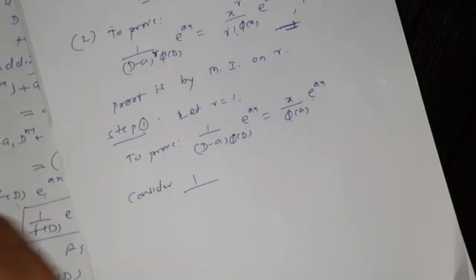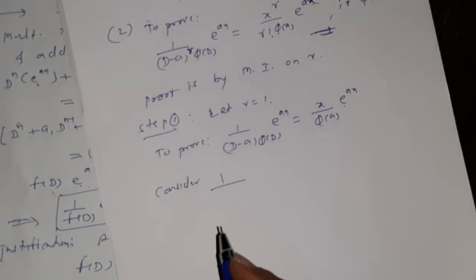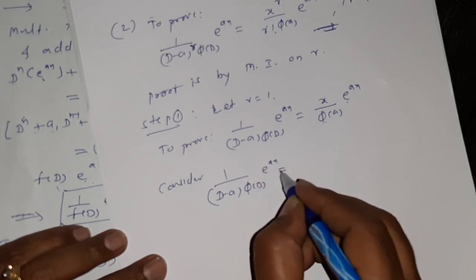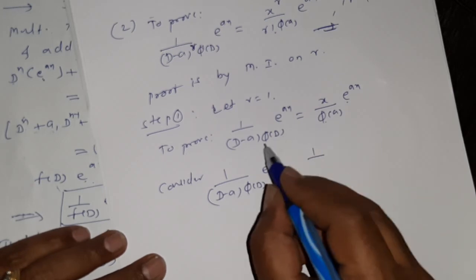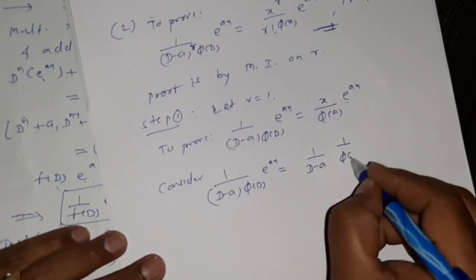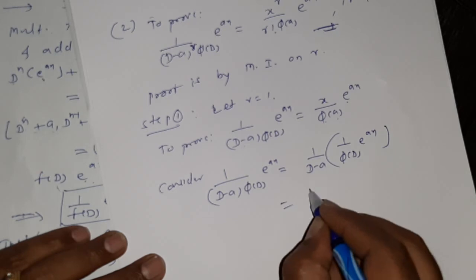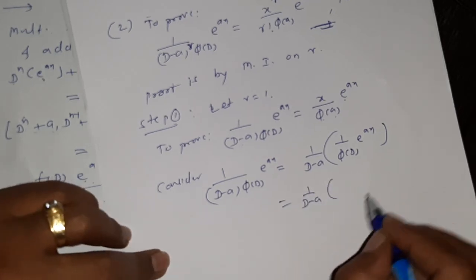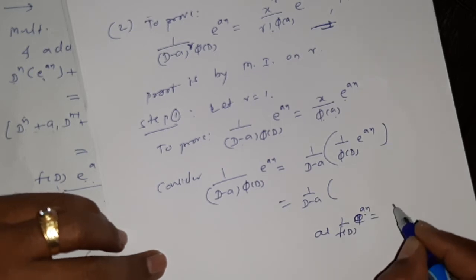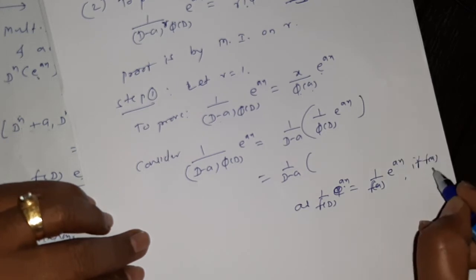That is, to prove: 1 by (D minus a) times φ(D) times e raised to ax equals x raised to 1 by 1 factorial, that is 1, times φ(a) times e raised to ax. This is obtained by substituting r equals 1. So we have to show: 1 by (D minus a) times φ(D) times e raised to ax equals x times φ(a) times e raised to ax. This is step 1 of mathematical induction. Consider LHS: 1 by (D minus a) times φ(D) of e raised to ax. We separate these factors: 1 by (D minus a) of [1 by φ(D) of e raised to ax]. Apply the first rule: 1 by f(D) of e raised to ax equals 1 by f(a) times e raised to ax, when f(a) is not equal to 0.